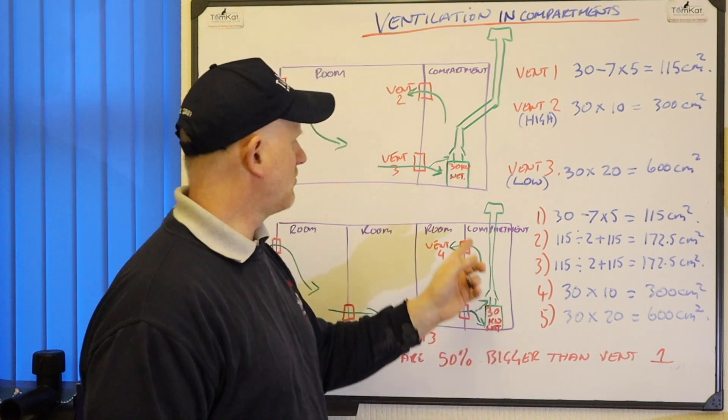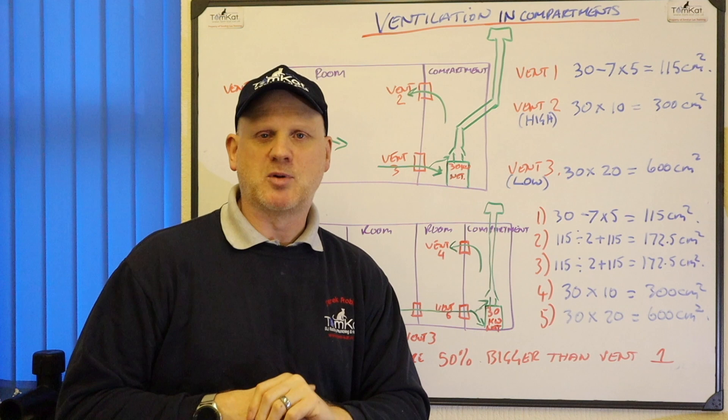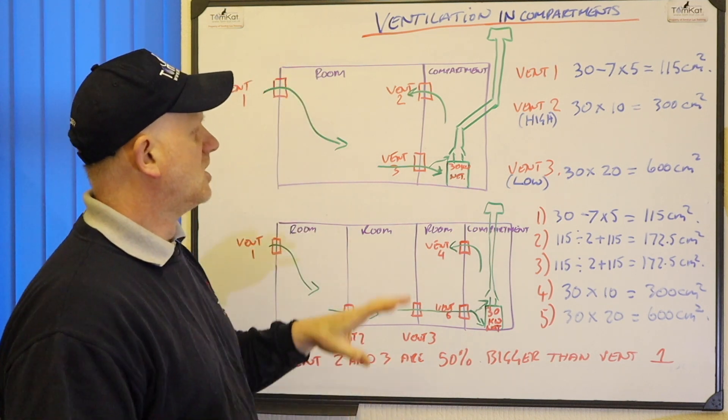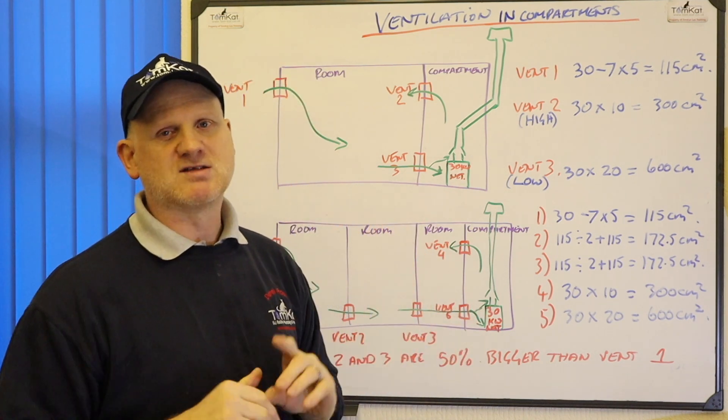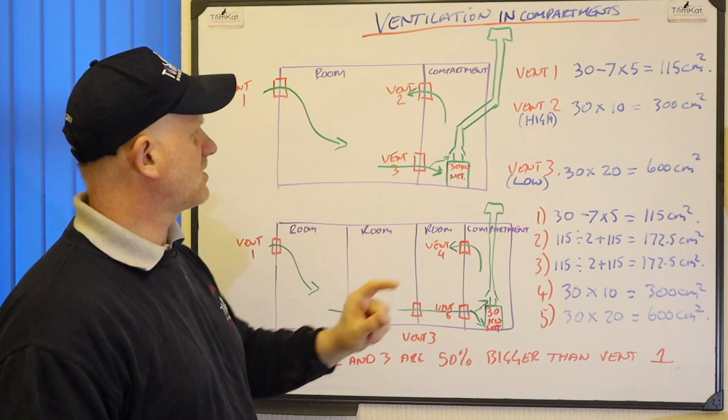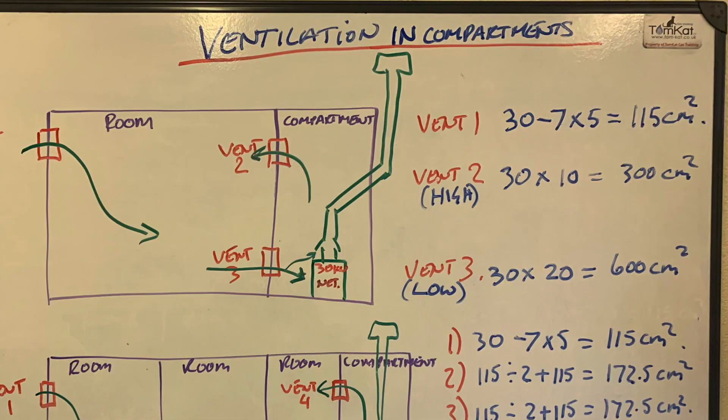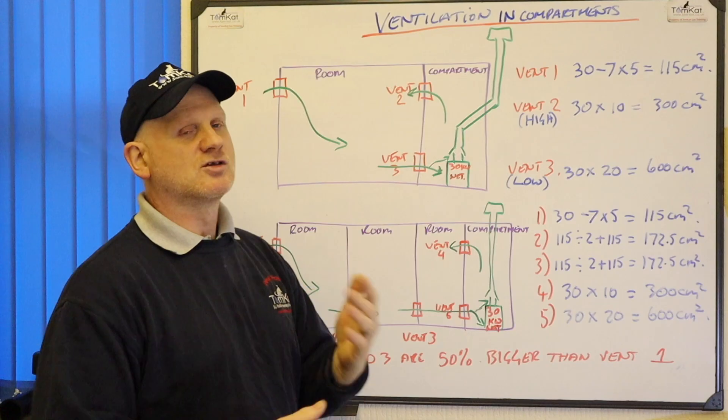So again we've got our 30kW net boiler installed in this compartment so we require three vents. So the vent outside, vent number one is our normal vent. So it's 30 minus 7 times 5 is 115cm². So that's normal.